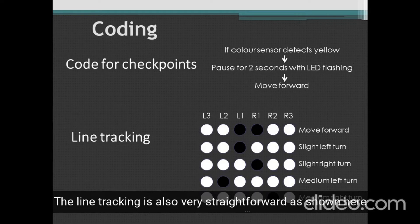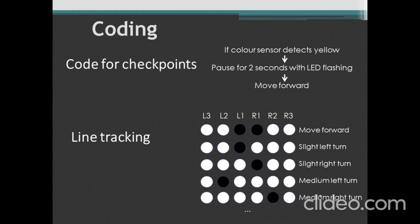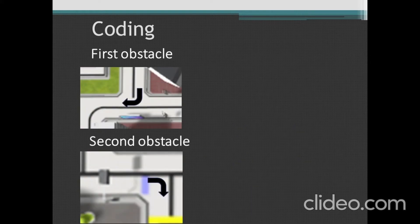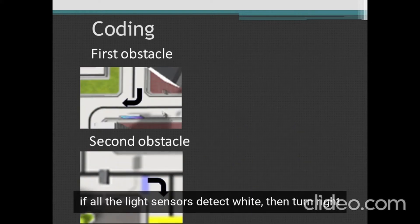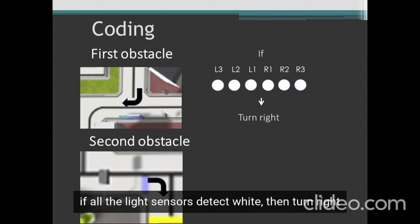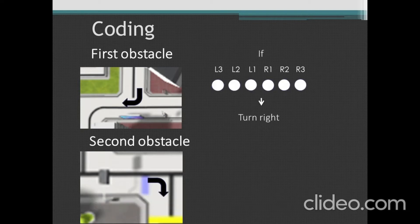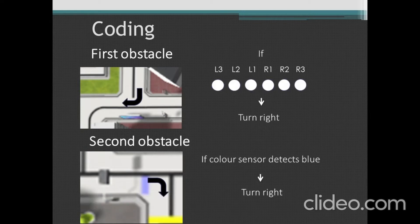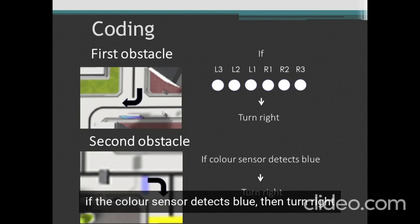The line tracking is also very straightforward, as shown here. For the first obstacle, if all the light sensors detect white, then turn right. For the second obstacle, if the colour sensor detects blue, then turn right.